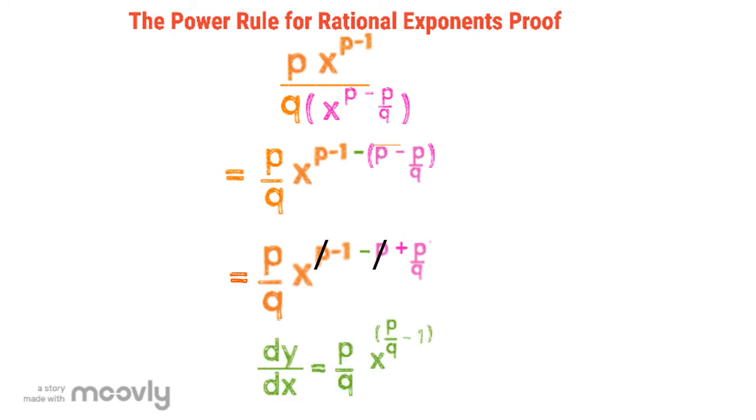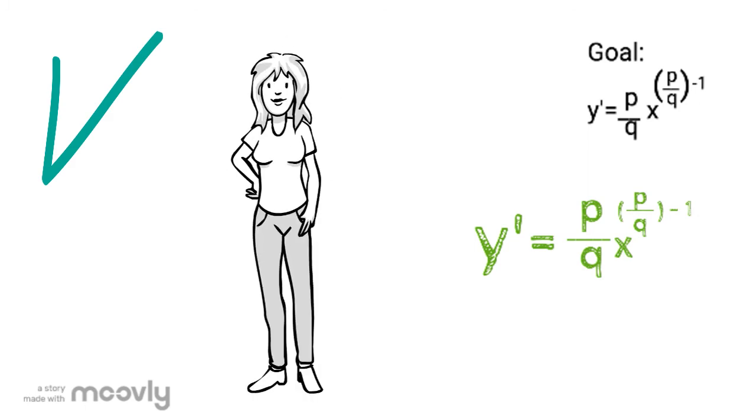And that gives us dy dx equals p over q x to the power of p over q minus 1, which is the same thing as y prime equals p over q x to the power of p over q minus 1. And that is exactly what we were aiming for from the beginning, so that is our proof. Yes!